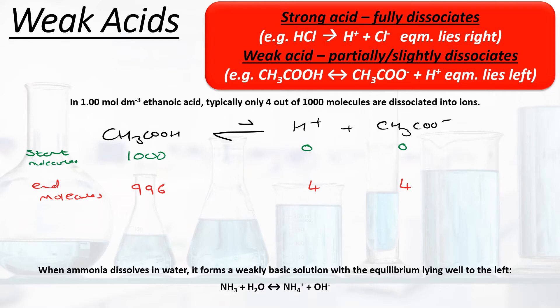Another example of a weak base would be ammonia. When we dissolve ammonia in water it forms a weakly basic solution, again with the equilibrium lying well to the left. The ammonia is acting as the base, accepting a proton from water, so we end up forming the ammonium ion NH₄+ and the hydroxide ion. But again, the equilibrium lies far to the left.